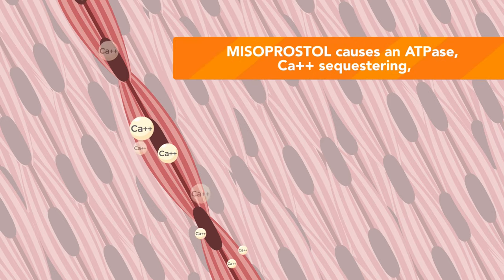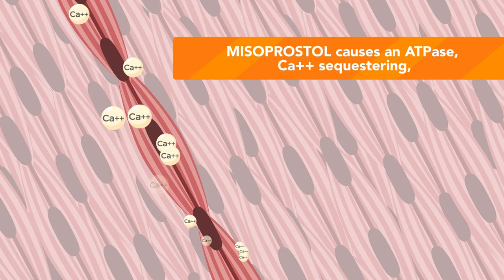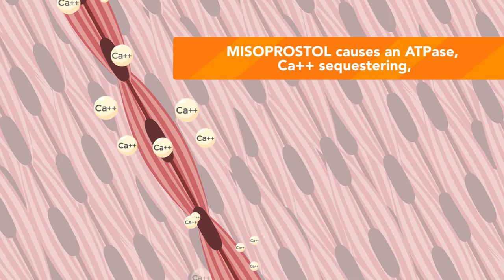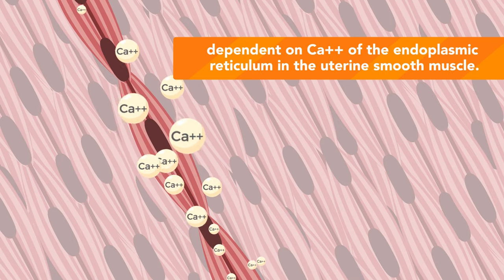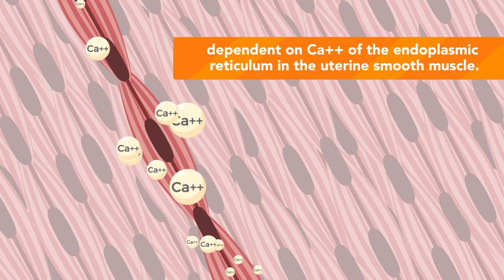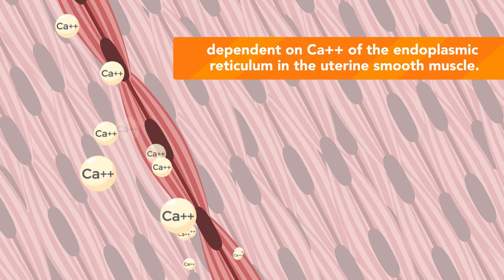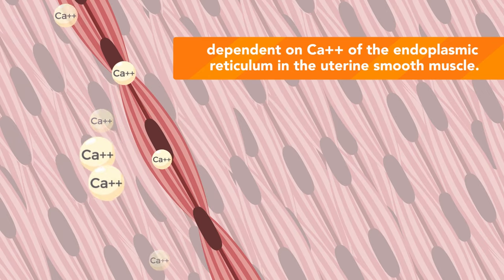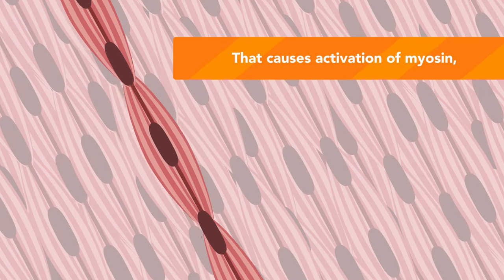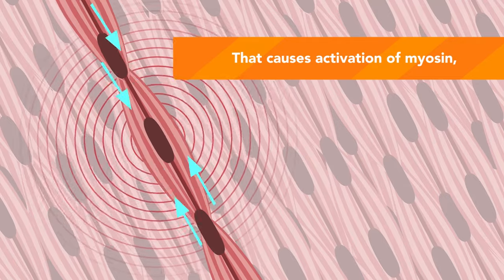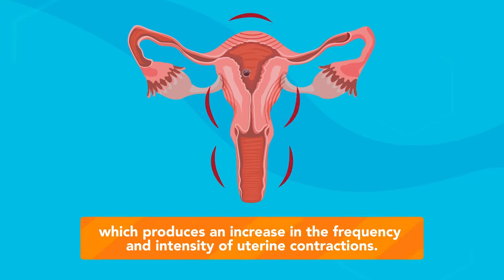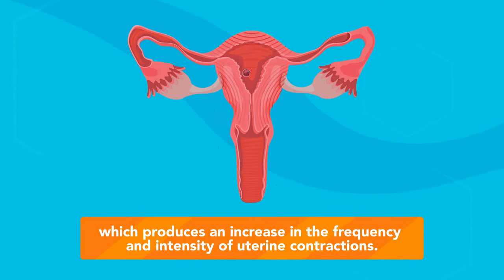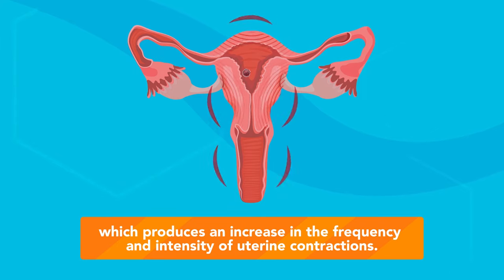Misoprostol causes an ATPase Ca²⁺-dependent sequestering of Ca²⁺ from the endoplasmic reticulum in the uterine smooth muscle, causing activation of myosin, which produces an increase in the frequency and intensity of uterine contractions.